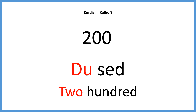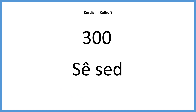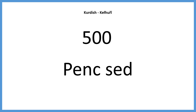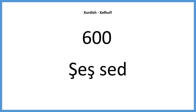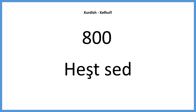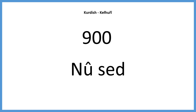Two hundred: du sed. Three hundred: seh sed. Four hundred: chwar sed. Five hundred: penj sed. Six hundred: shesh sed. Seven hundred: heft sed. Nine hundred: nu sed. This simple rule applies to each multiple of a hundred.